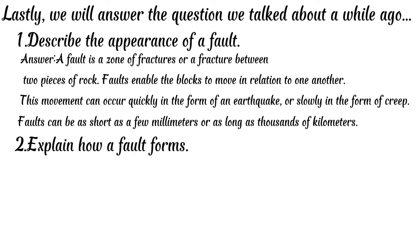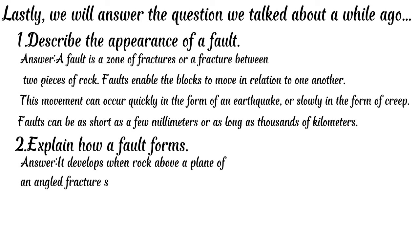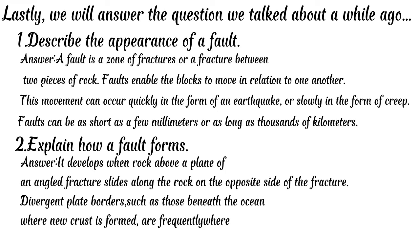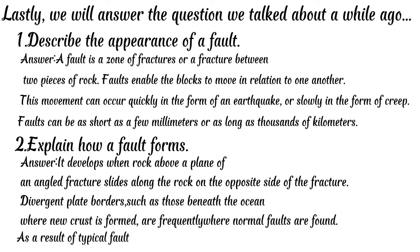Number two: explain how a fault forms. It develops when rock above a plane of an angled fracture slides along the rock on the opposite side of the fracture. Divergent plate borders, such as those beneath the ocean where new crust is formed, are frequently where normal faults are found. As a result of typical faulting, long, deep valleys can also develop.